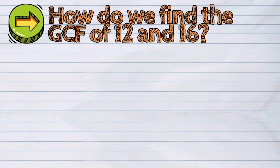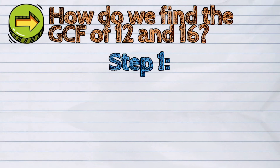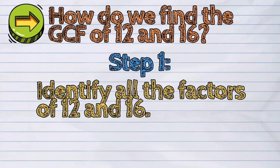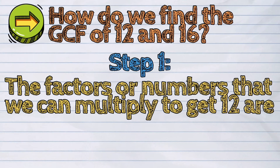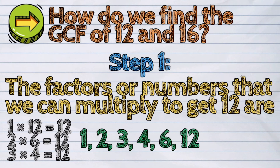How do we find the GCF of 12 and 16? The first step is to identify all the factors of 12 and 16. The factors, or numbers that we can multiply to get 12, are: 1, 2, 3, 4, 6, and 12.